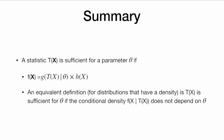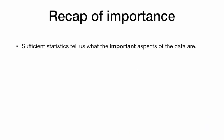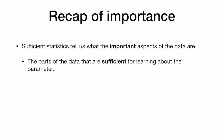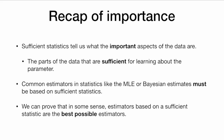In summary, a statistic T(X) is sufficient for a parameter if we can factor it according to the factorization theorem into a part involving T and the parameter, and another part involving only X. An equivalent definition is that T(X) is sufficient for theta if the conditional density of X given our statistic does not depend on theta. The factorization strategy is to drag all of the thetas to the left while leaving as many X's to the right as possible — any X's remaining to the left make up our sufficient statistic. Sufficient statistics tell us what is important about the data, and common estimators like the maximum likelihood estimate or Bayesian estimate must be based on sufficient statistics. Estimators based on a sufficient statistic are the best possible estimators we could find.